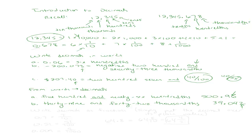We can also write decimals as fractions. We talked about this earlier — for example, six times one over ten. To write the decimal 0.7 as a fraction, simply take the digit after the decimal point, which is seven, and put it over its place value, which is ten. So 0.7 equals seven over ten.